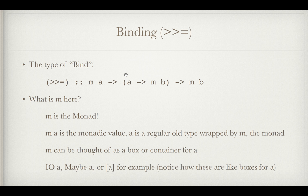So if we look at the type of bind, we see that it's of type MA to function that takes an A and gives you an MB to MB. So what is M here? M is the monad and MA is the monadic value. You can think of A as just some regular type like an integer or a float or a char which is wrapped by M, the monad itself. So M can be thought of as kind of a box or a container for A, this more basic type.